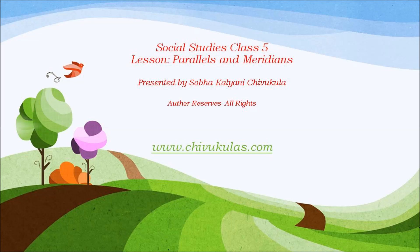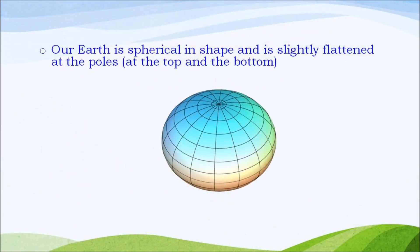Shape of our earth. Our earth is spherical in shape and it is slightly flattened at the poles.